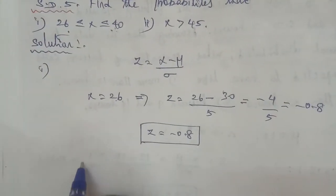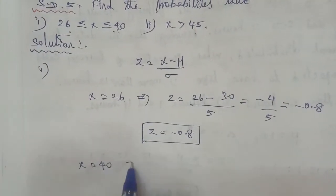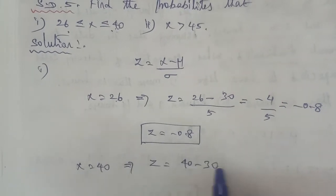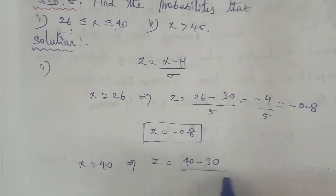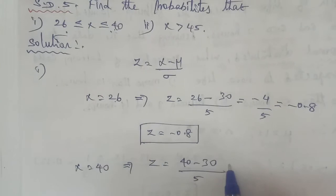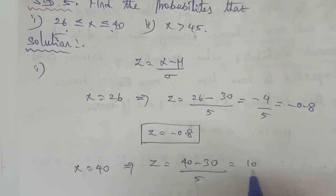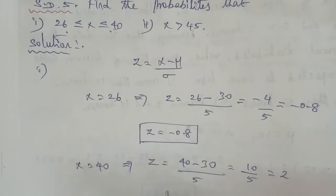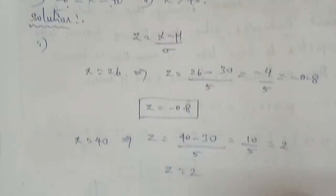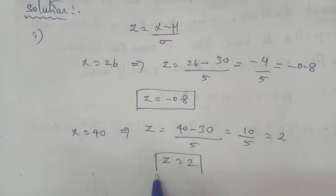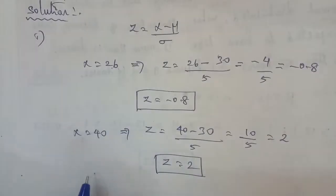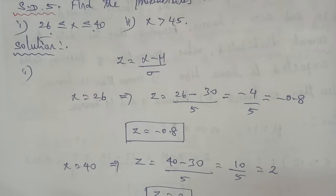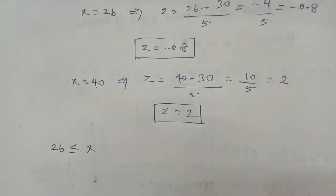Next, when X is equal to 40, Z is equal to 40 minus 30 divided by 5, which is 10 by 5, so Z equals 2. The given question asks for P(26 ≤ X ≤ 40).